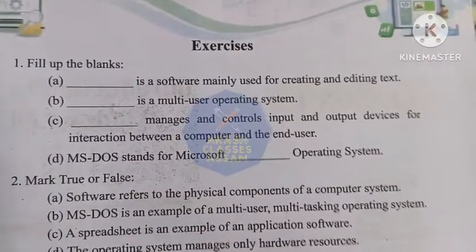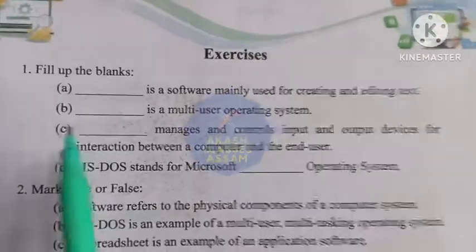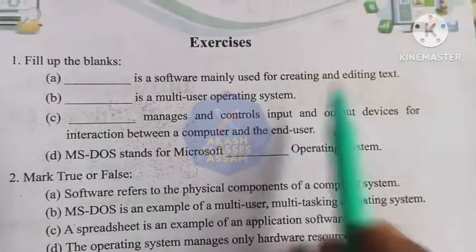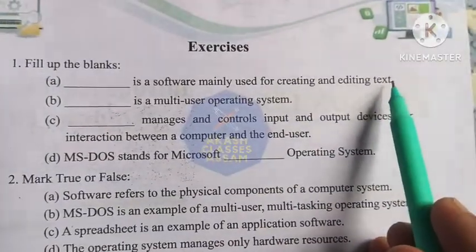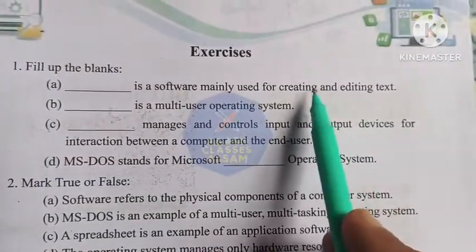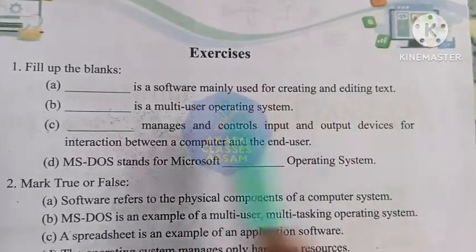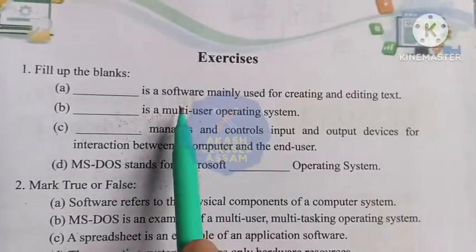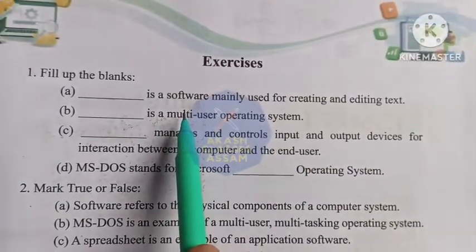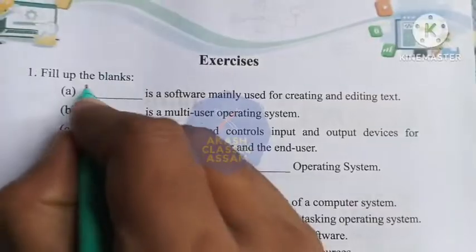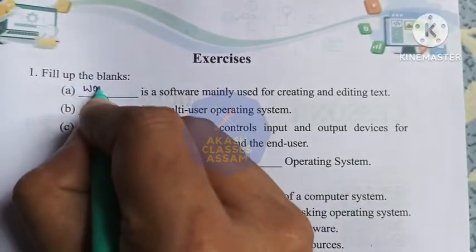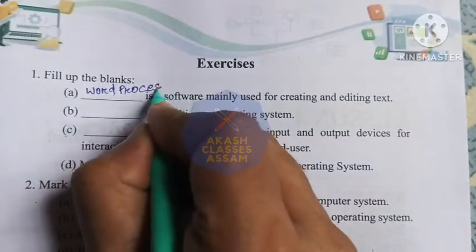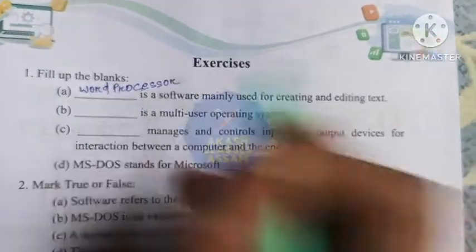Our first question is fill up the blanks. Dash is a software mainly used for creating and editing text. The answer is word processor.